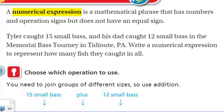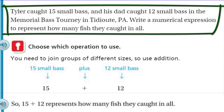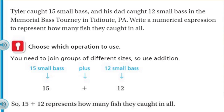So let's take a look at our problem. Tyler caught 15 small bass and his dad caught 12 small bass in the Memorial Bass Tournament in Pennsylvania. Write a numerical expression to represent how many fish they caught in all. We need to join groups of different sizes, so use addition. Because we have 15 small bass that Tyler caught and his dad caught 12. That expression is 15 plus 12.